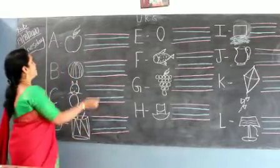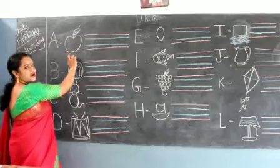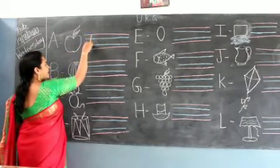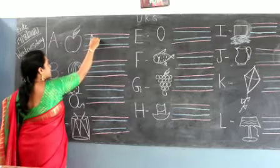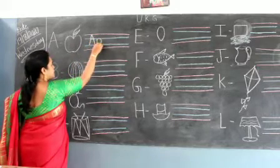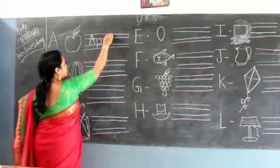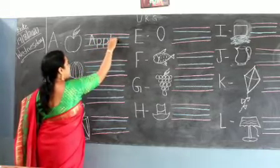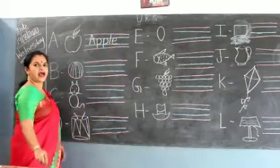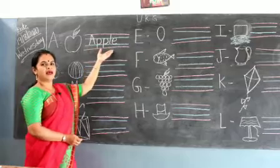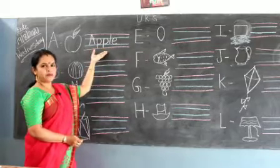Apple. A for apple. See how we are going to write? A, P, P, L, E, apple. A, P, P, L, E, apple.